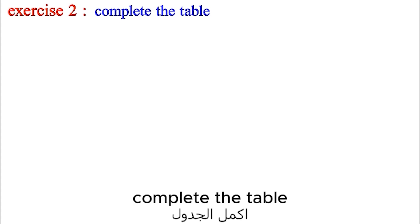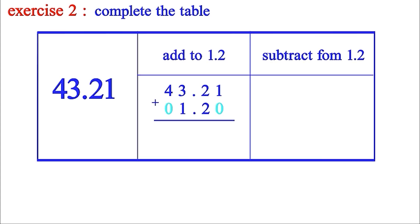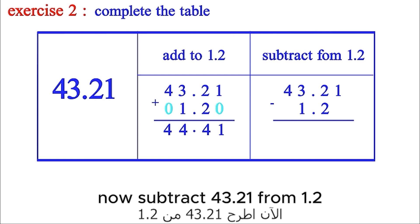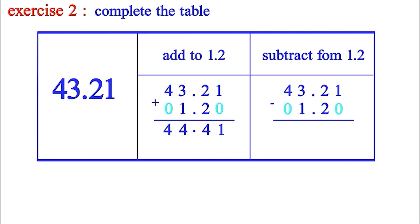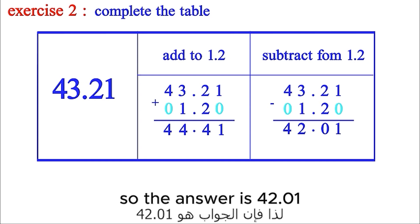Second question: Complete the table. First, add 43.21 and 1.2 using the same steps: 1 plus 0 is 1, 2 plus 2 is 4, put the dot, 3 plus 1 is 4, 4 plus 0 is 4. The answer is 44.41. Now subtract 1.2 from 43.21: 1 minus 0 is 1, 2 minus 2 is 0, put the point, 3 minus 1 is 2, 4 minus 0 is 4. The answer is 42.01.